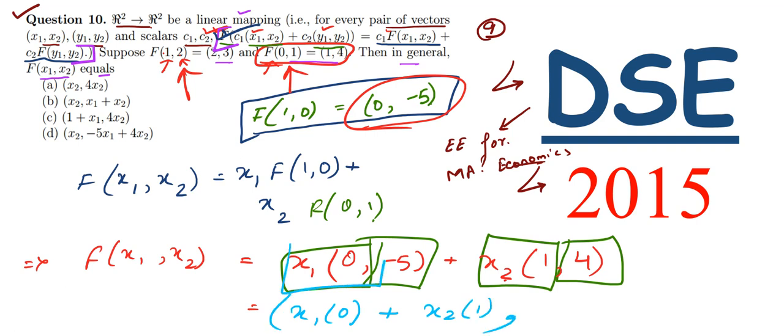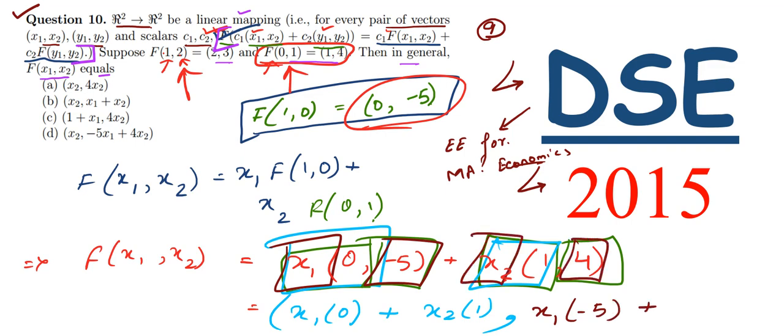Here we have (x₁·0 + x₂·1, x₁·(-5) + x₂·4). The first term is from the first components, and the second term is from the second components.